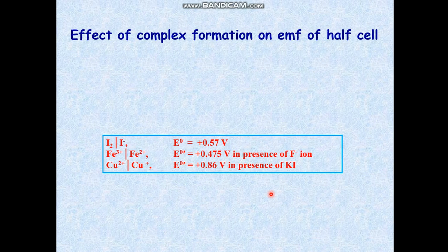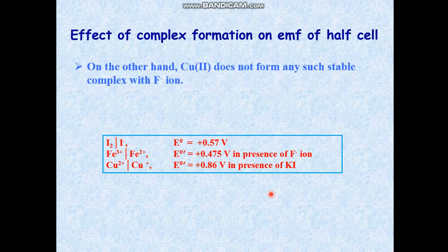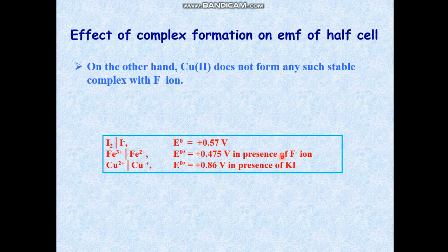On the other hand, Cu(II) does not form any such stable complexes with F⁻ ion. Now what is the scenario? The I₂/I⁻ system has redox potential of 0.54 V. The Fe³⁺/Fe²⁺ system in presence of fluoride ion has changed its formal potential to +0.475 V, below 0.54 V. On the other hand, the Cu²⁺/Cu⁺ system has formal potential of +0.86 V in presence of KI.